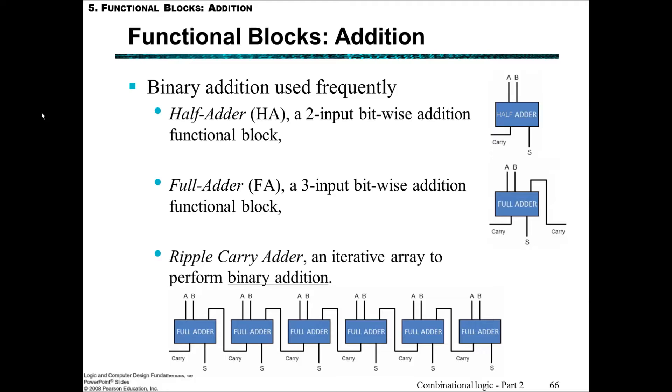We have the half-adder, which is a two-input bitwise addition function; the full-adder, which is a three-input bitwise addition functional block; and the ripple carry adder, which is an iterative array to perform binary addition. The idea of the ripple carry is that as you perform the carry operation, it ripples through the rest of the solution, potentially overflowing and causing further ripples in more significant bits.